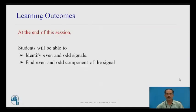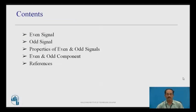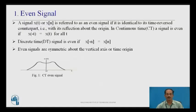Let us start with the learning outcomes first. At the end of this session, students will be able to identify even and odd signals and find even and odd components of the signal. These are some of the contents: even signal, odd signal, properties of even and odd signals, and even and odd component references.